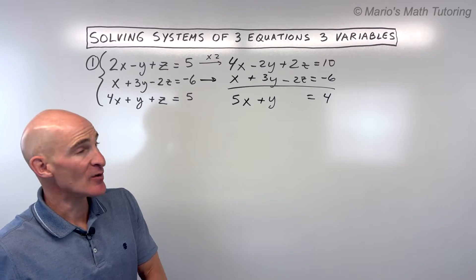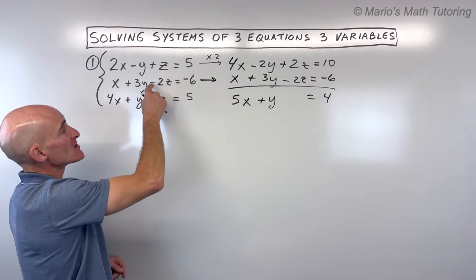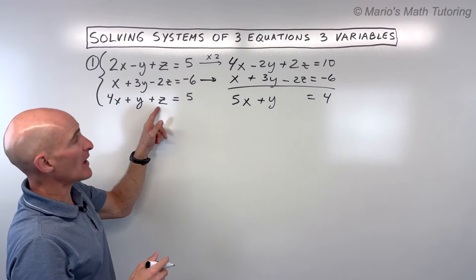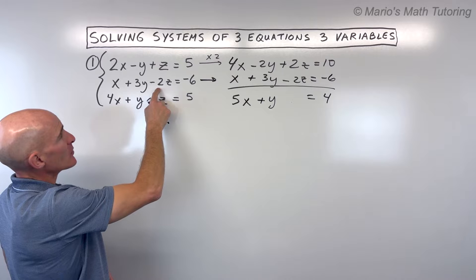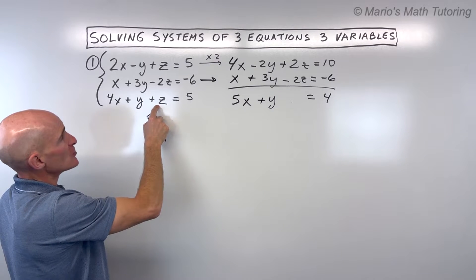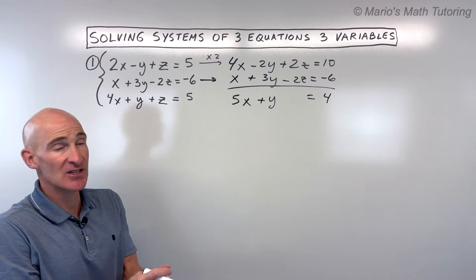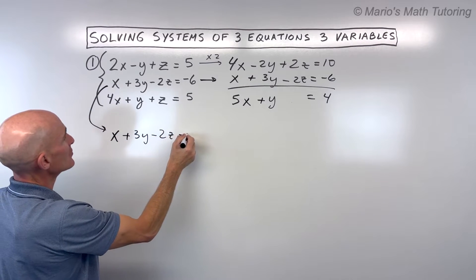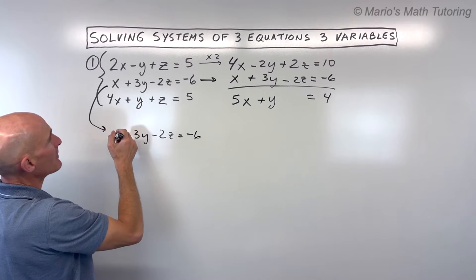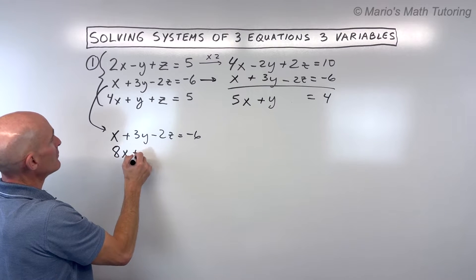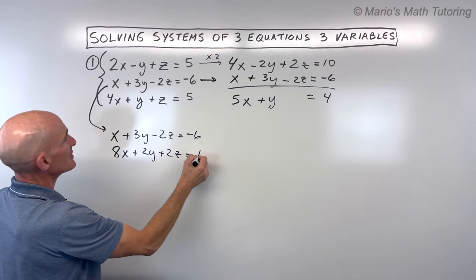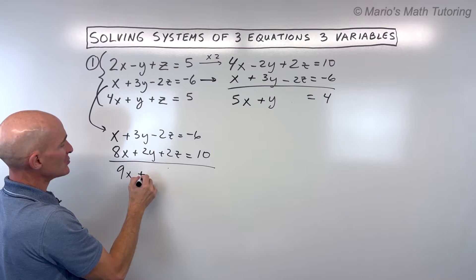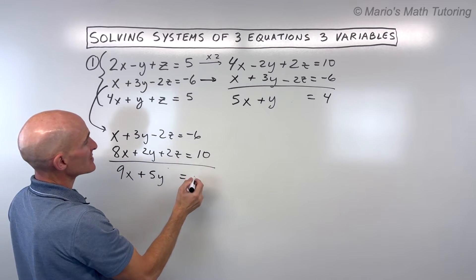Now we want to stick with the z's — we decided we're going to eliminate the z's. We used the first and second equations, so we have to use that third equation. Let's combine it with the second one. If I multiply the third equation by 2, we'll have 2z, and adding it to the middle equation with negative 2z, the z's will cancel. That gives us x plus 3y minus 2z equals negative 6 added to 8x plus 2y plus 2z equals 10. Adding straight down: 9x plus 5y equals 4.